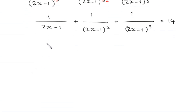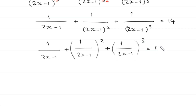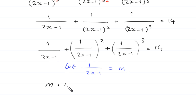So we have 1/(2x-1) + 1/(2x-1)² + 1/(2x-1)³ = 14. Let's suppose that m = 1/(2x-1). Then the equation becomes m + m² + m³ = 14.